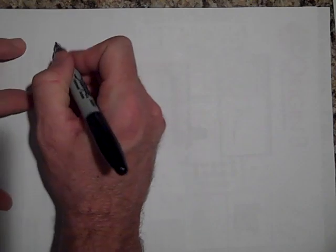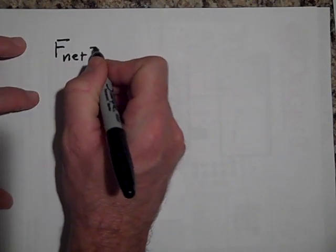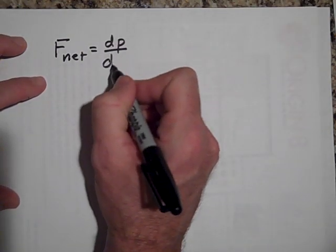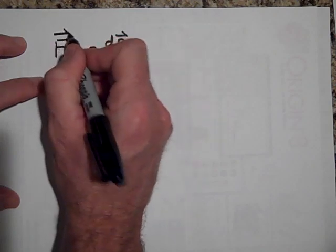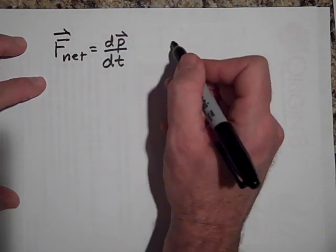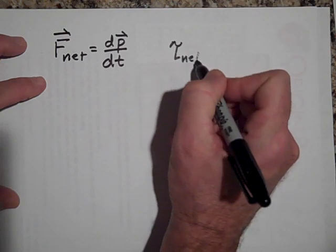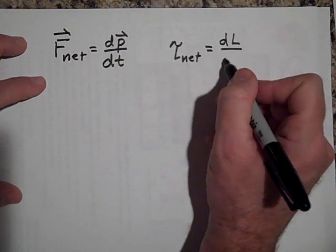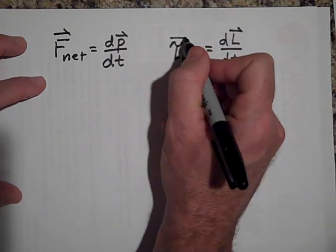One other thing about angular momentum. With angular momentum, just as f net equaled dp dt, the rate at which momentum changes with time, net torque is equal to dL dt, the rate at which angular momentum changes with time.